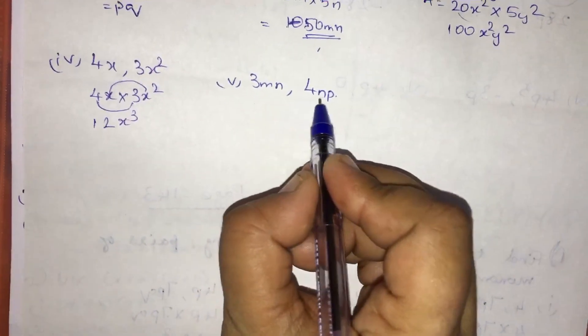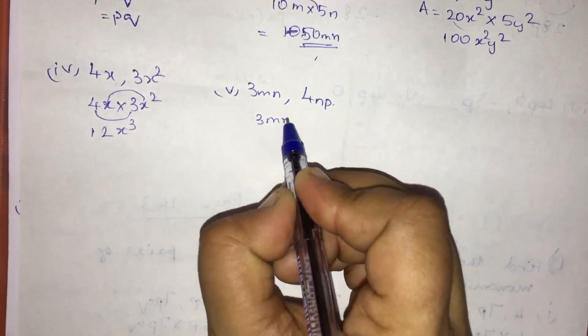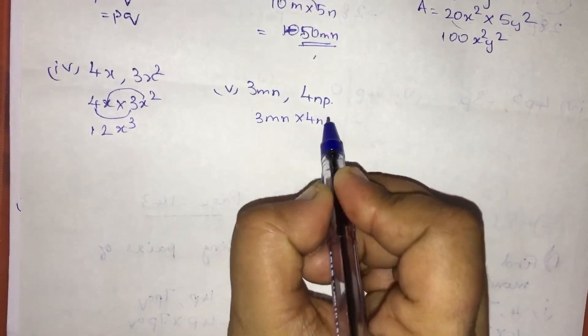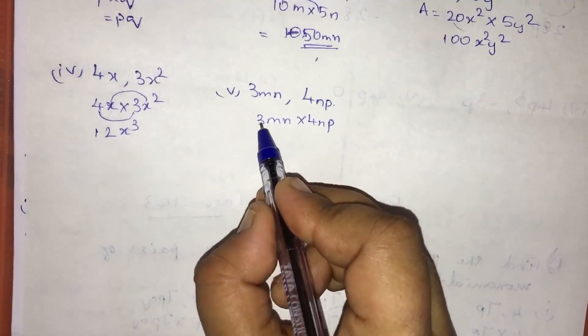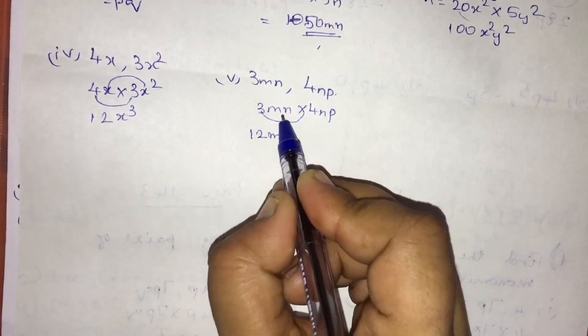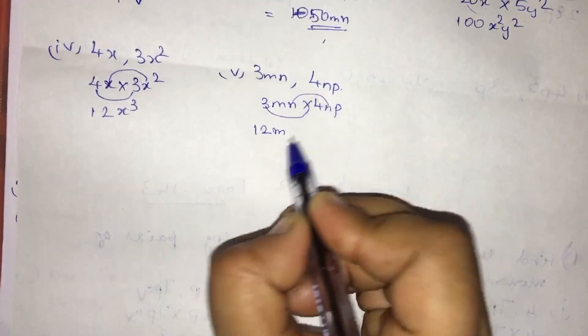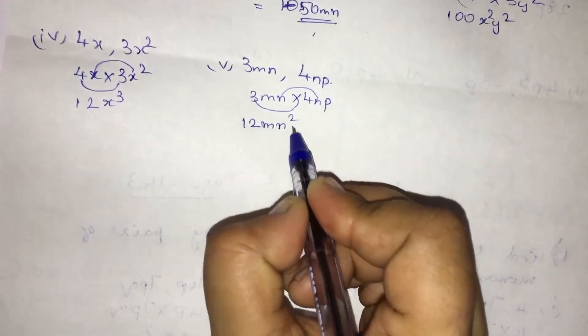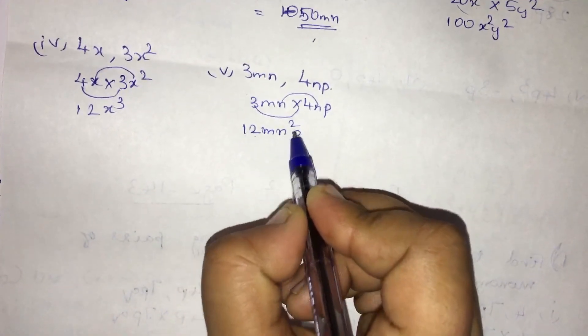3mn, 4np. 3mn into 4np. 3 into 4 is 12, m into n into n into p. So the area is equal to 12mn square p.